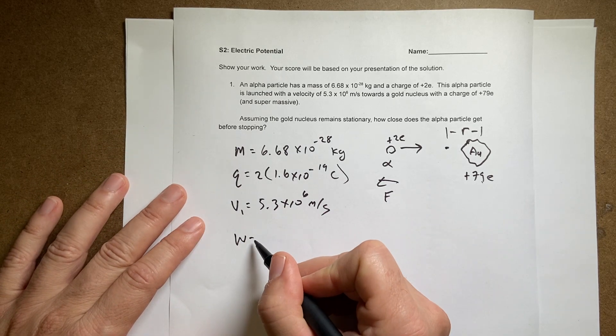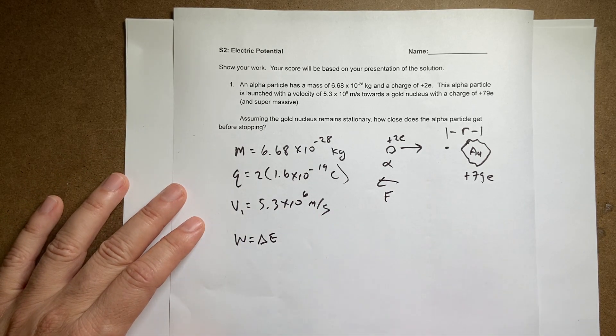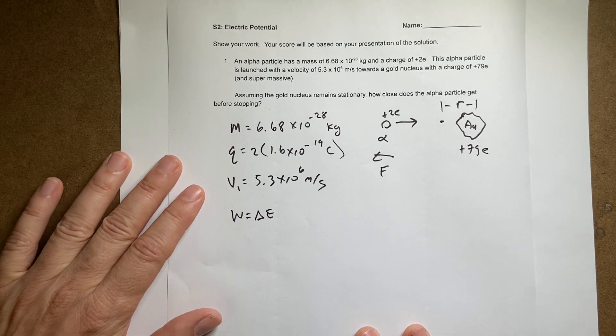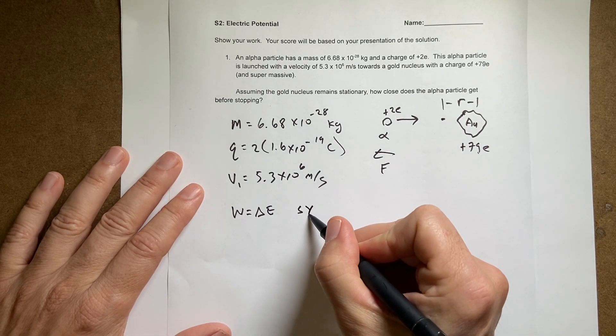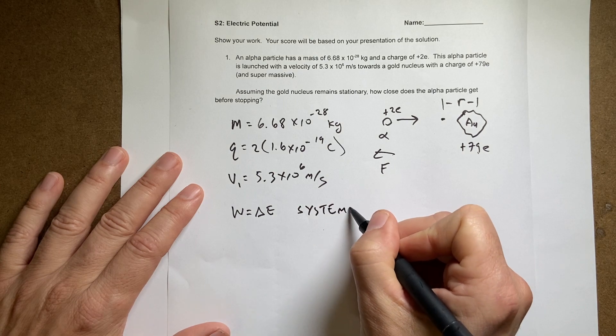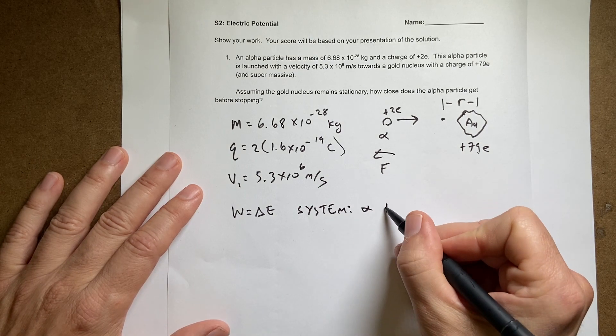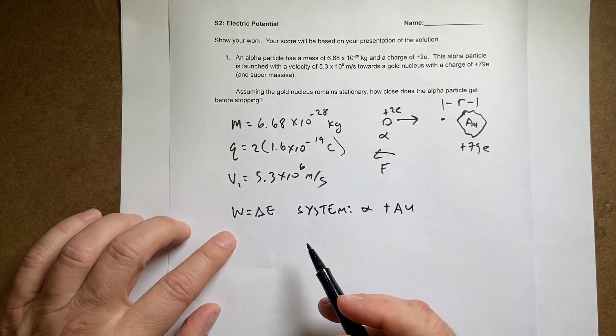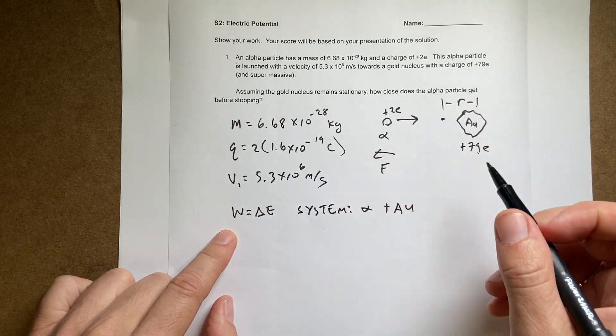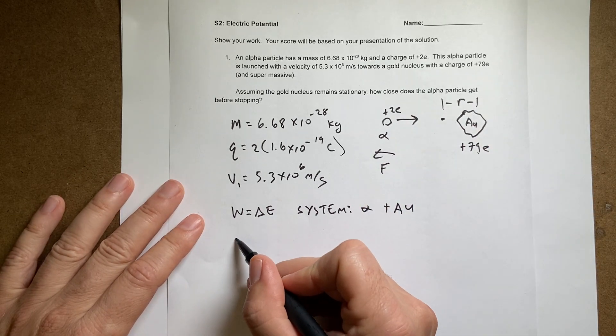Instead, we can use the work energy principle. So this says the work is equal to the change in energy. I'm going to have my system be the alpha particle plus the gold, which means that there's no external forces on my system. So I will have zero work.